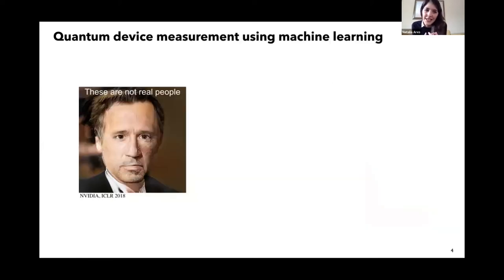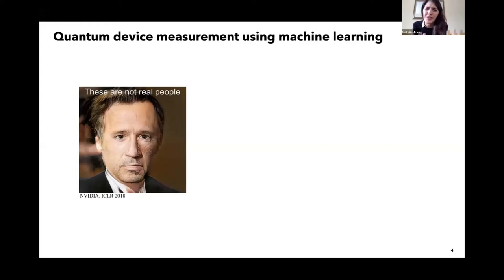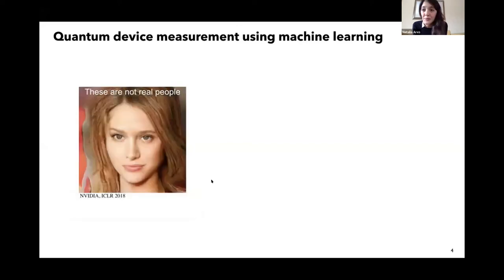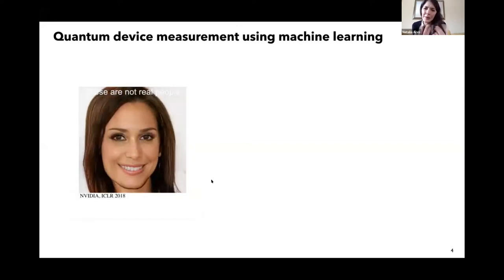The technique we use — one of the techniques — is deep generative models. Although you might not be familiar with those, this is something we know very well, because this is something we do all the time. We can close our eyes and imagine a cat and come up with something that looks very realistic, but it might not be a real cat, because we've been observing cats for a long time. The same can be done by this algorithm. Here you can see a deep generative model coming up with human faces — these are not real people, but they look very realistic.